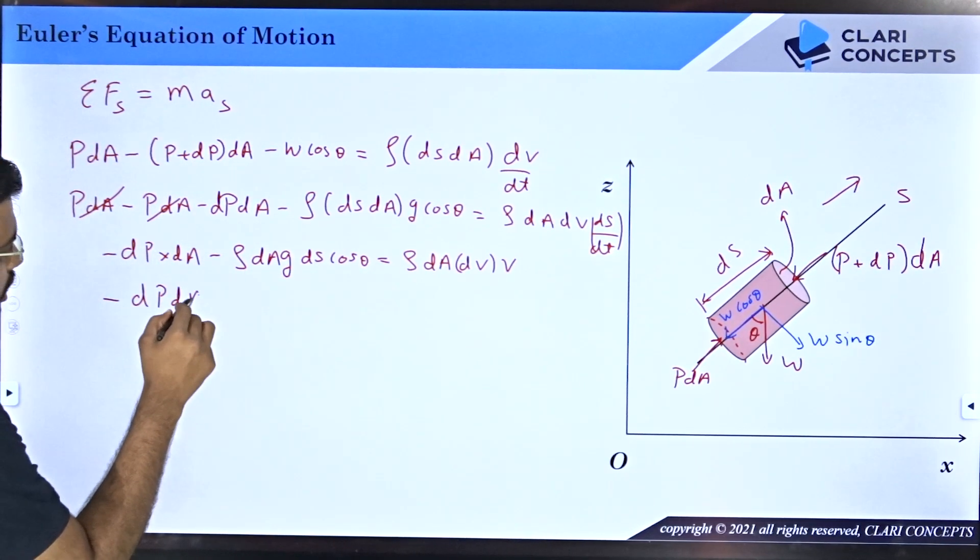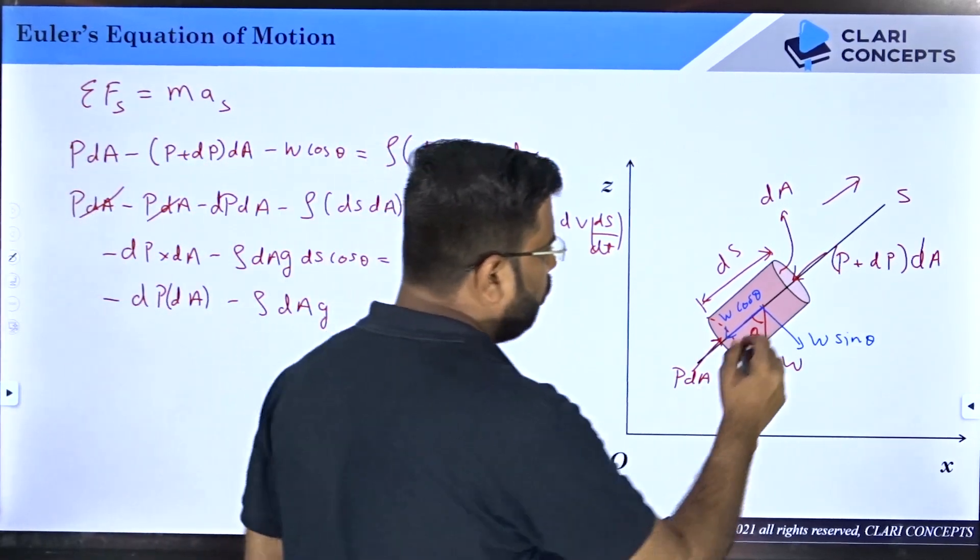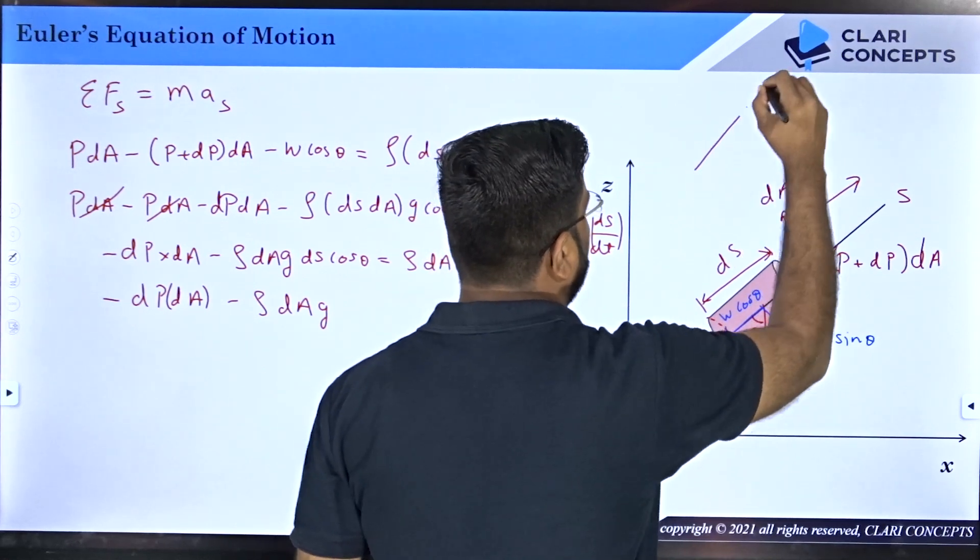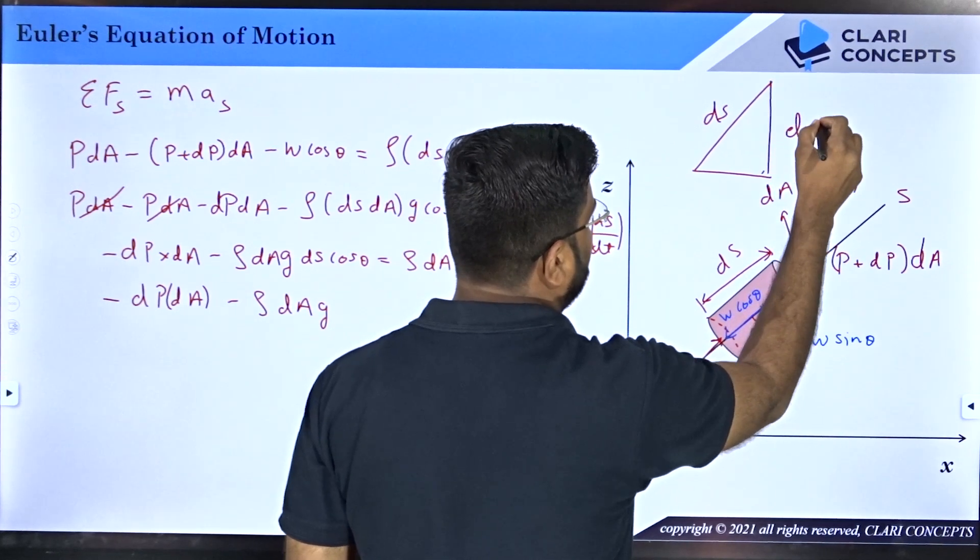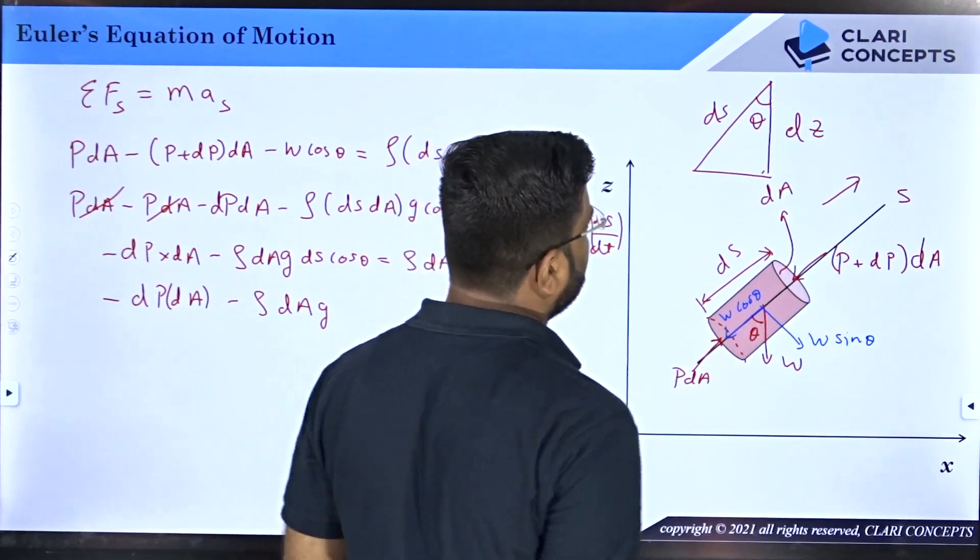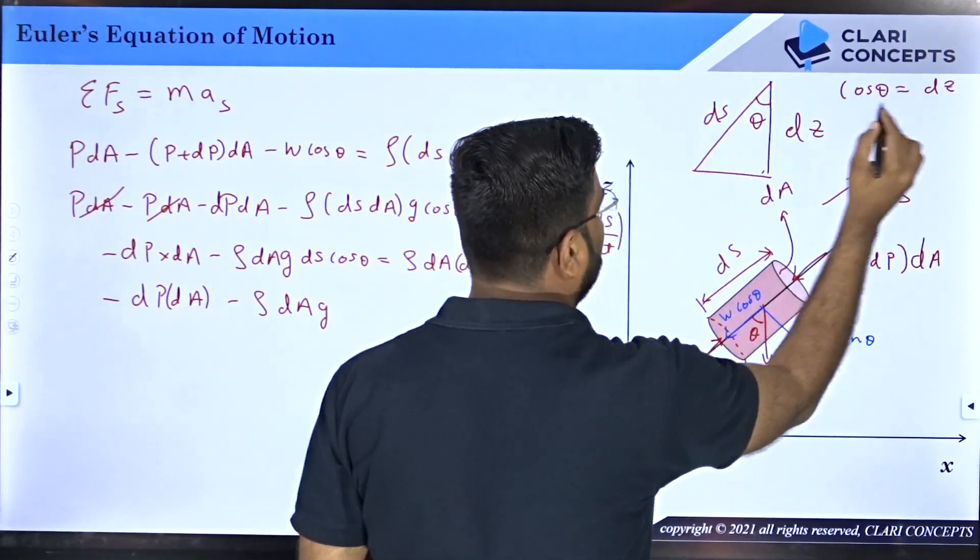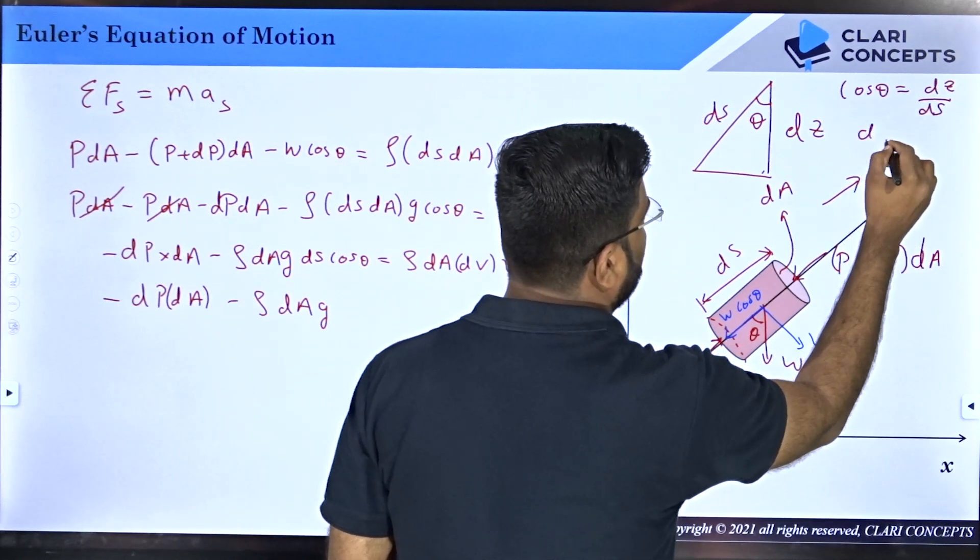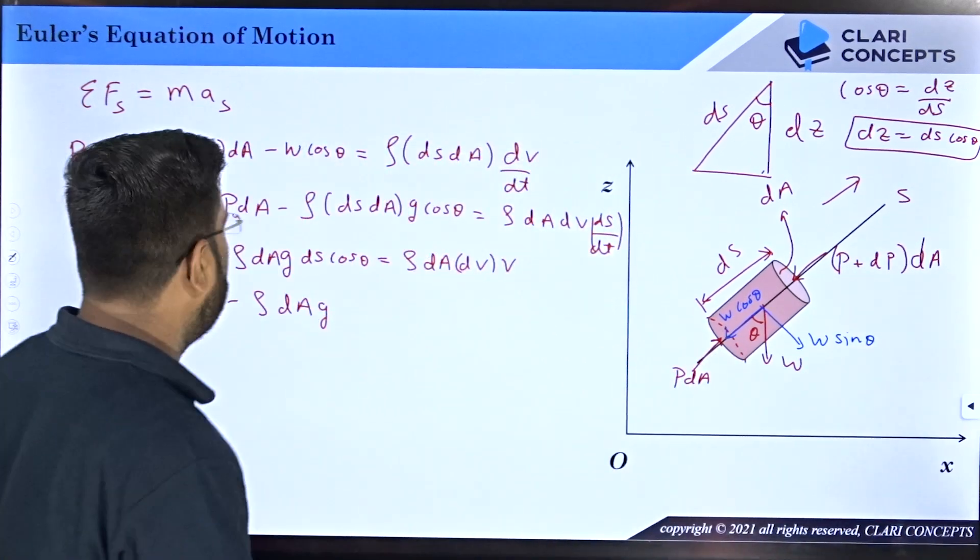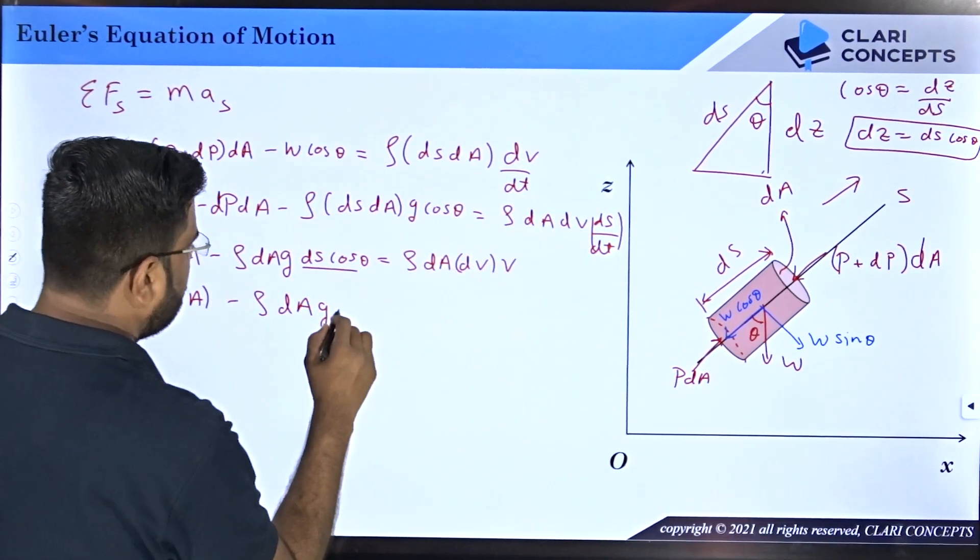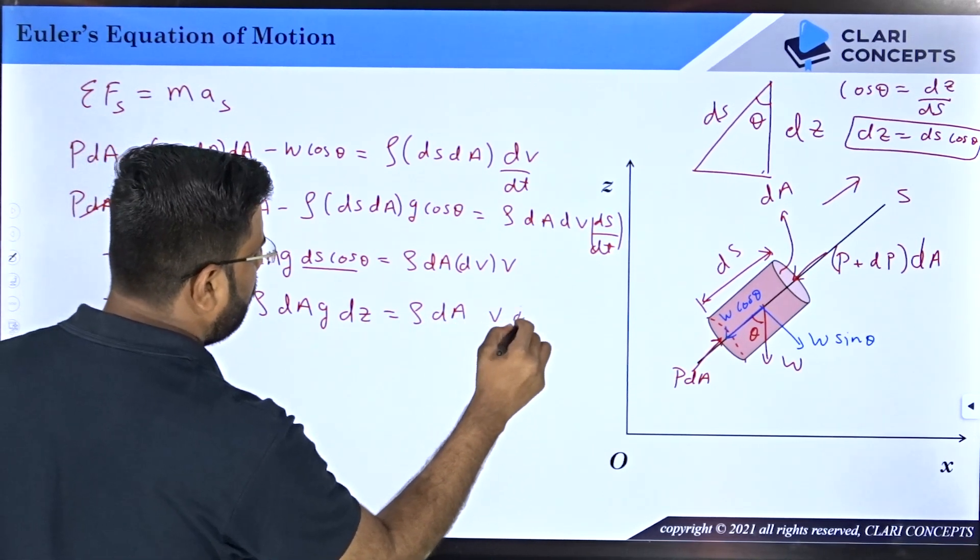Now what is dS cos theta? If you look at this element, I can say length is dS. This vertical length is dZ and this is angle theta. Can you say that cos theta equals dZ, that is adjacent by hypotenuse dS? Therefore dZ equals dS cos theta.